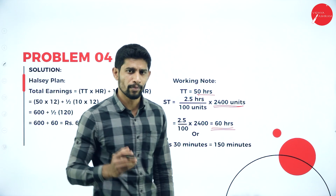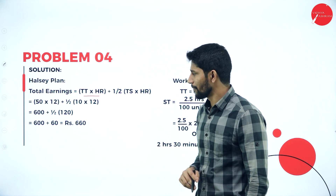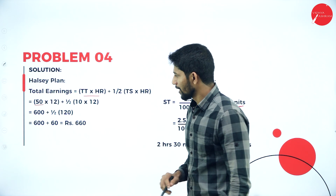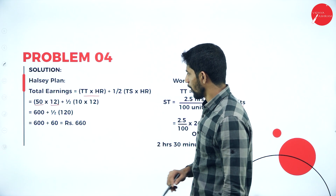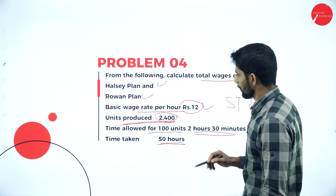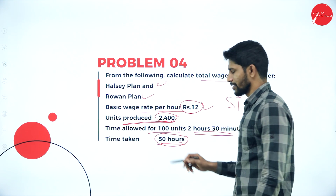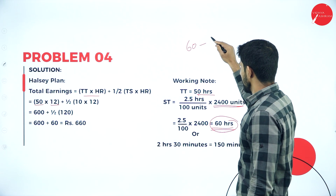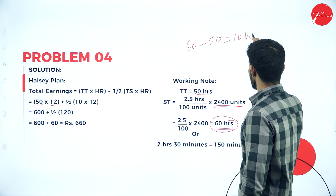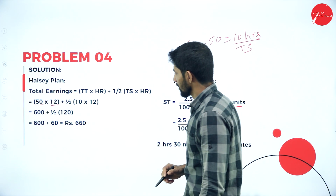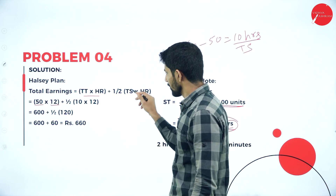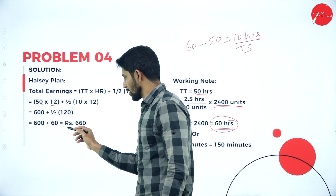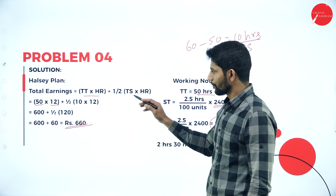Applying the Halsey plan formula: time taken × hourly rate + half of time saved × hourly rate. Time taken is 50 hours, hourly rate is 12 rupees. Standard time 60 minus time taken 50 equals time saved of 10 hours. So: 50 × 12 + half of 10 × 12 = 600 + 60 = 660 rupees total earnings under Halsey plan.